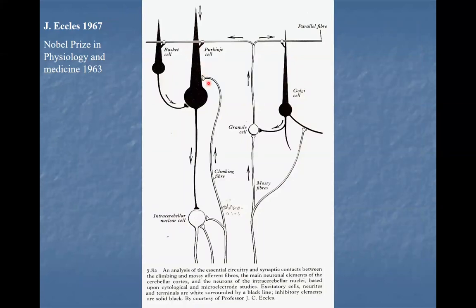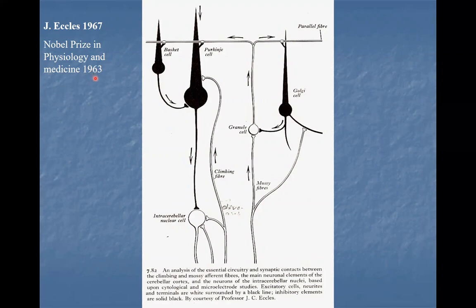The cerebellum and its cells were deeply analyzed by physiologists, most notably John Eccles, who was awarded the Nobel Prize in Physiology and Medicine in 1963 for his discoveries related to the cerebellar cortex and specifically to Purkinje cells. After the award, Eccles was knighted by Queen Elizabeth II, and since that time he is referred to as Sir John Eccles. So, what did Sir John discover?